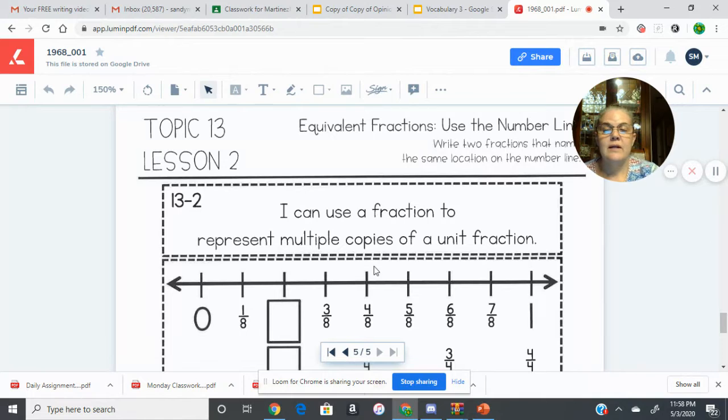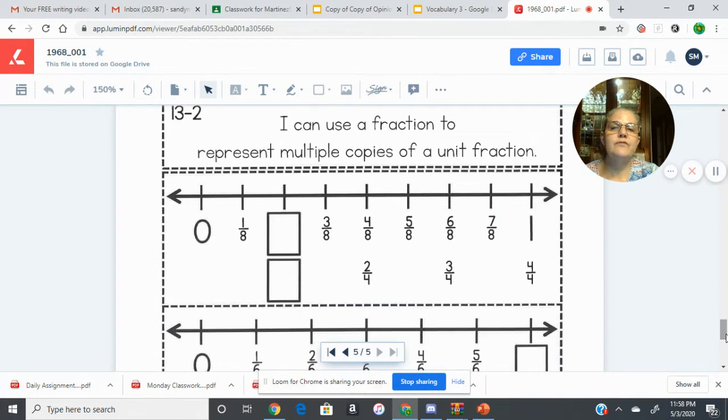Here is our math is fun interactive notebook paper. You're going to cut out along the dotted line. You don't need to cut the center dotted lines, just cut around the outside. It says, I can use a fraction to represent multiple copies of a unit fraction. We've got this number line broken up into eighths. We can see that one eighth, then what? Three eighths, four eighths, five eighths, six eighths, seven eighths, eight eighths. We know we need to write in two eighths here.